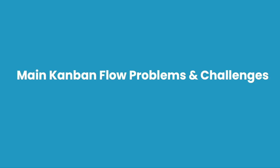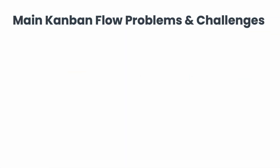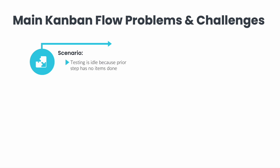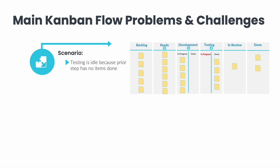We will look at the main Kanban flow problems and challenges. In this scenario, testing is blocked because the prior step has no items done. The quality assurance engineers have finished their user stories, and no other work items are done from the development side. The dev done columns are empty, and the developers are all working on in-progress items.